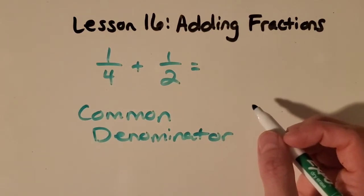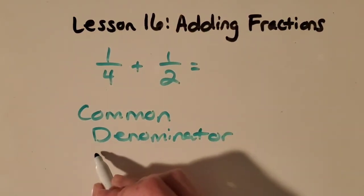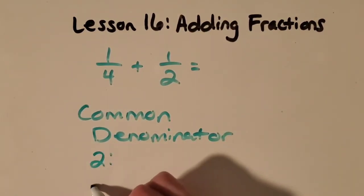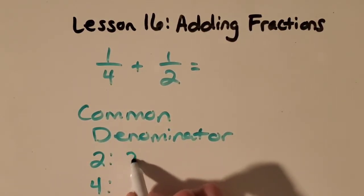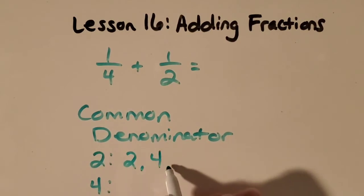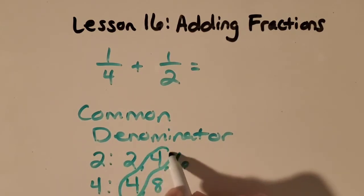If we can list multiples of those two numbers, then we can find something they have in common, a common multiple. So I'm going to start listing my twos and my fours to see what they have in common. We've got two, four, six. I already see that there's a four here, and this other denominator is four. So if I start listing that, four, eight. I already have something they have in common. Awesome. They have fours in common.